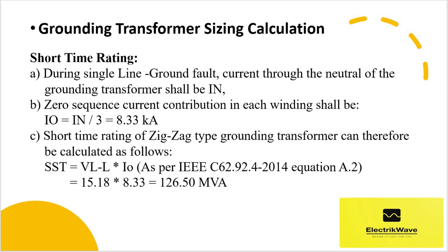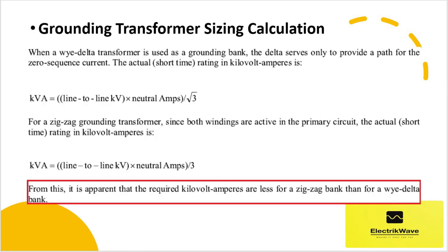Sst = line-to-line voltage × zero sequence current, as per IEC 62.90.4-2014, equation A.2, which comes out to: 15.18 kV × 8.33 kA = 126.50 MVA. Note that there are two different formulas to calculate the short time rating for a Y-delta transformer and a zigzag type grounding transformer, as shown here.